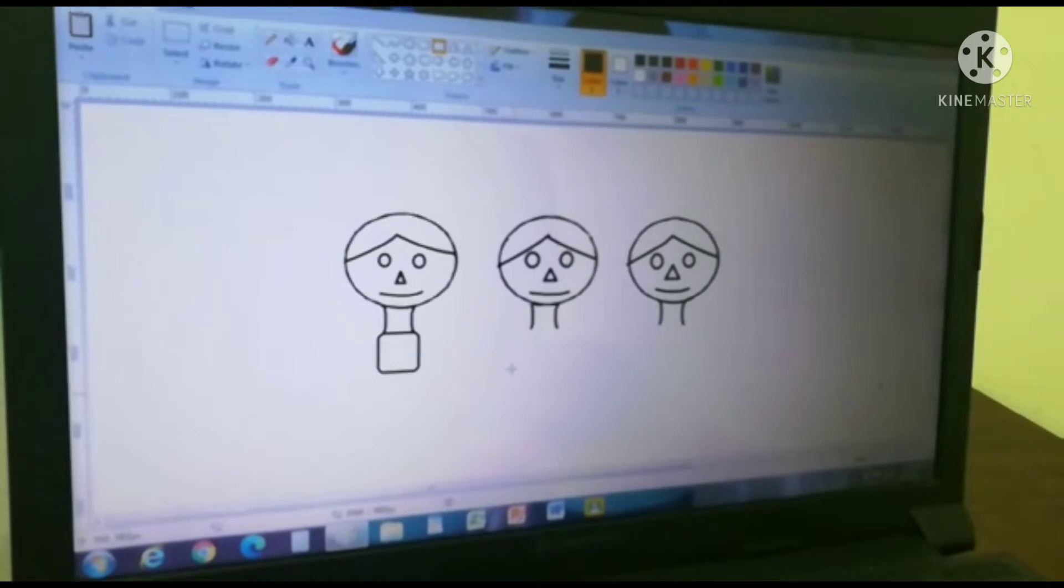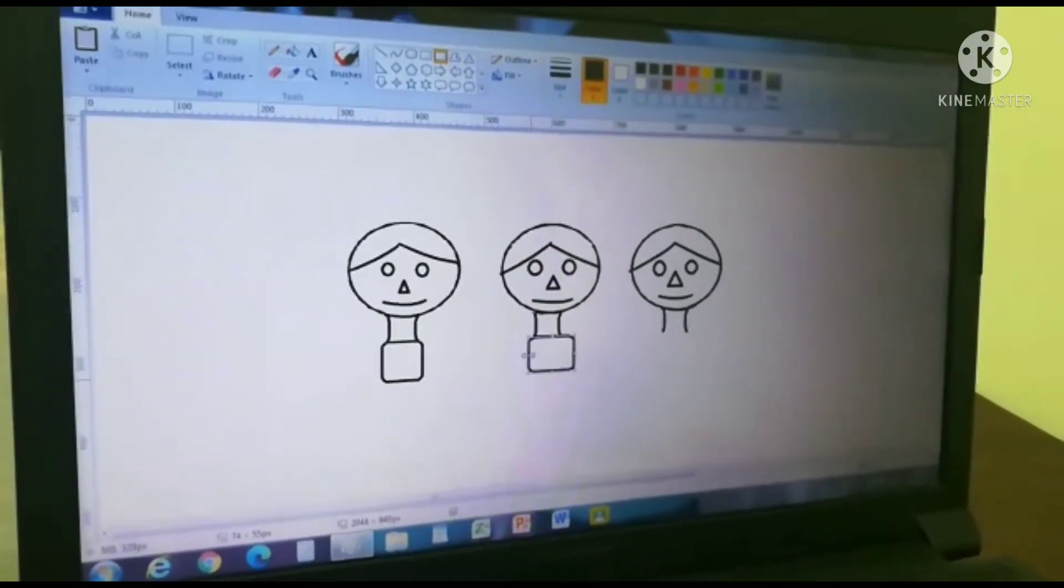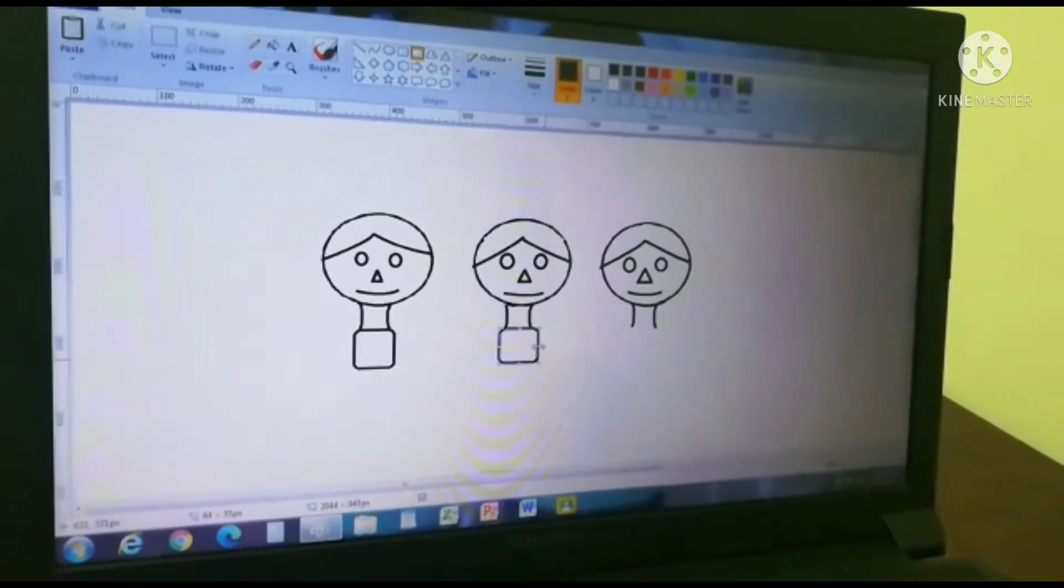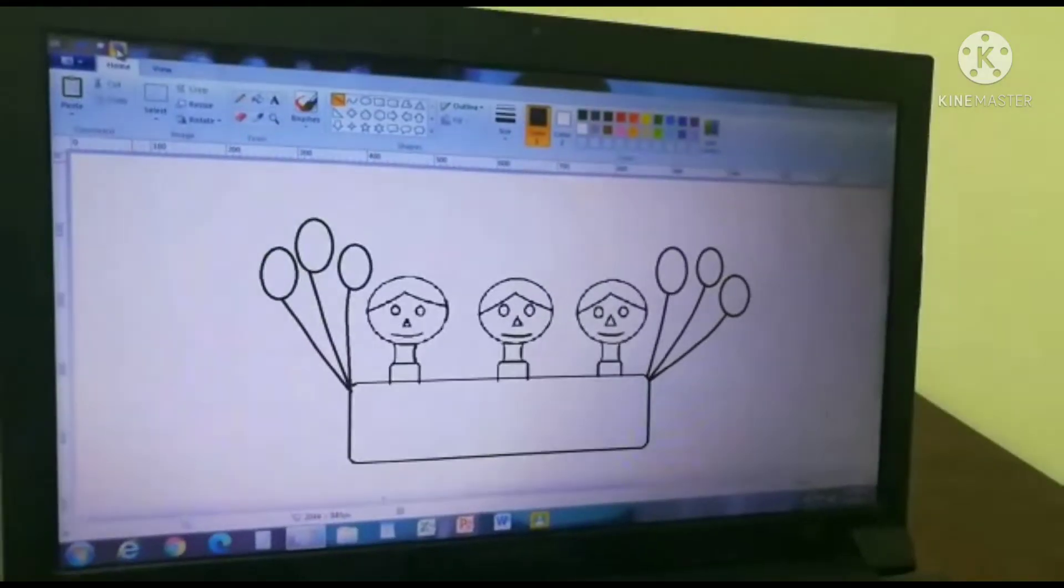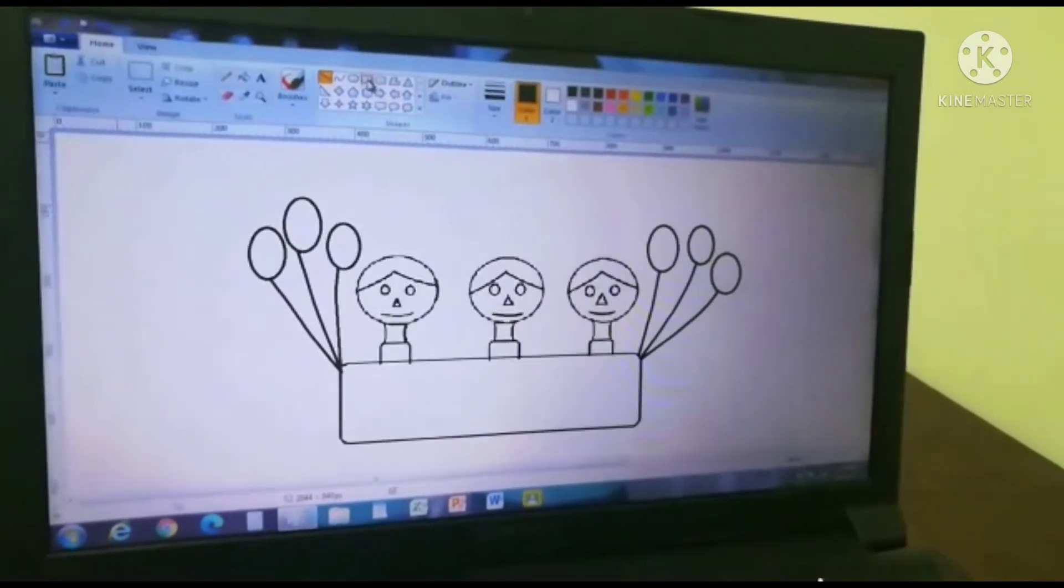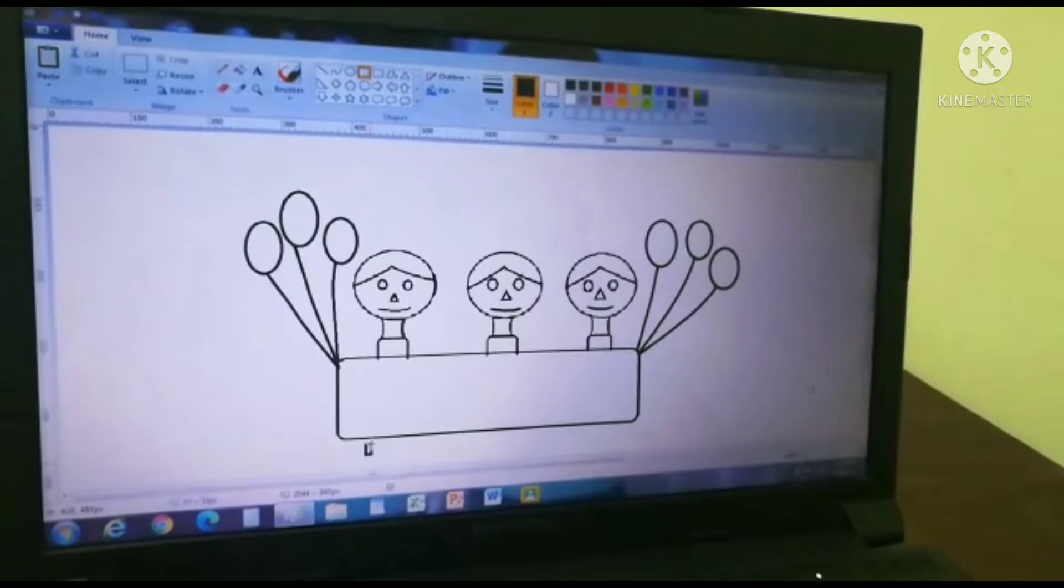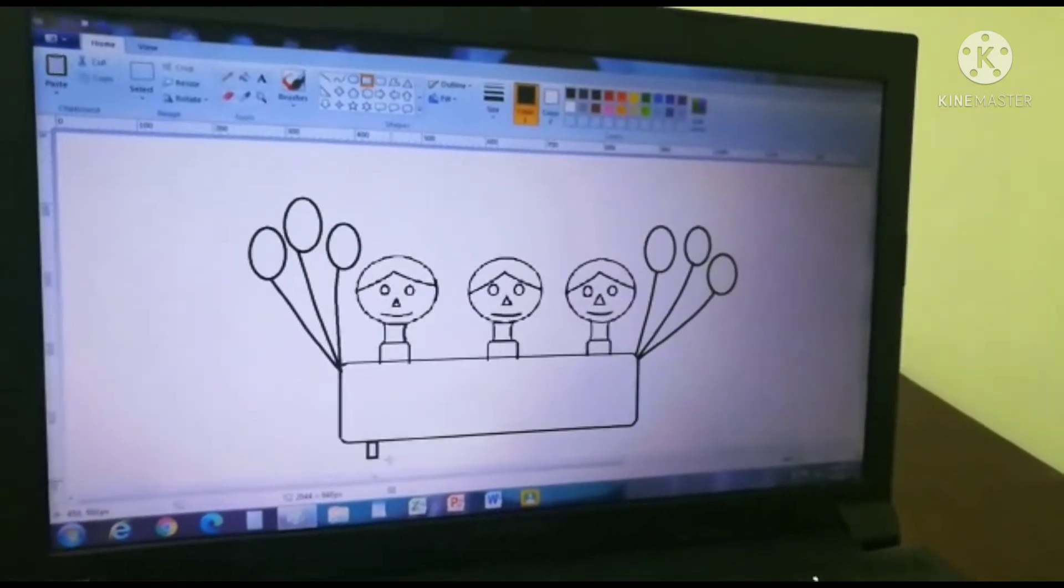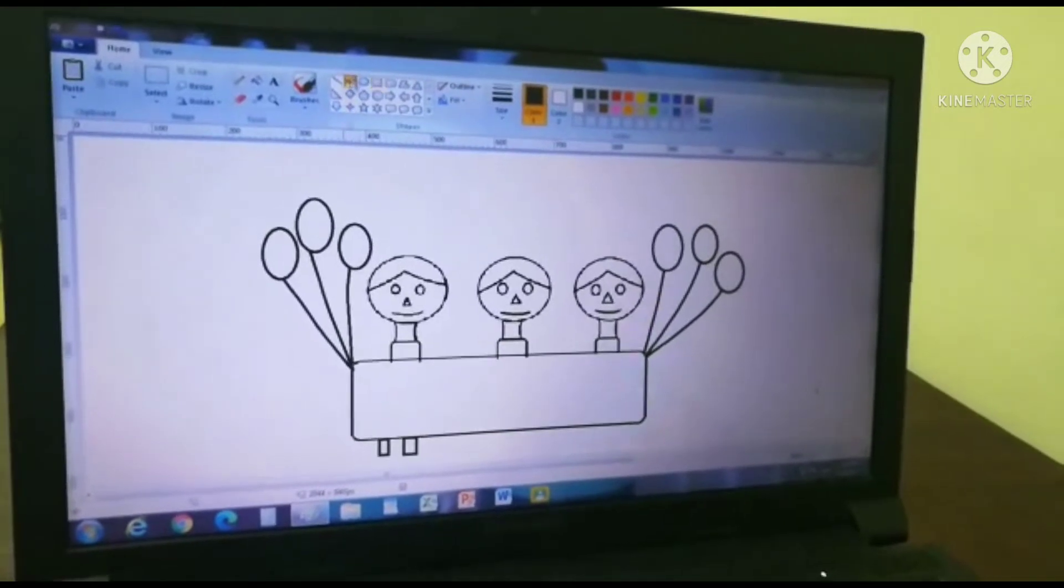Now draw for the three bodies. Now we are going to draw the legs. Take square, put here one and here one and take to draw the shoes.